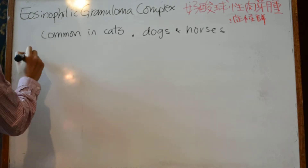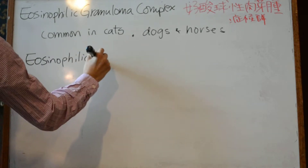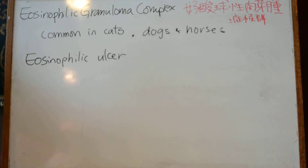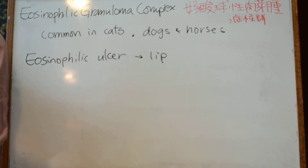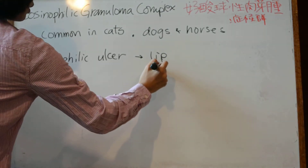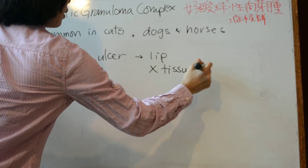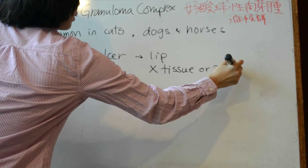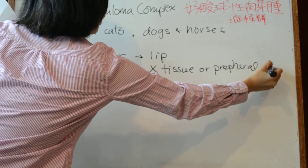The eosinophilic ulcer — also called the indolent or rodent ulcer — usually appears on the lip, without tissue or peripheral eosinophilia.